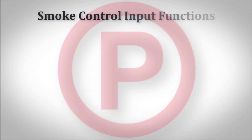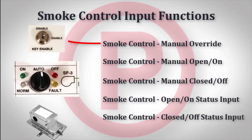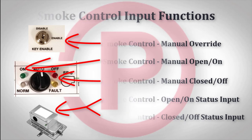To accommodate standard smoke control systems, the Potter programming software has several point types specifically for smoke control. The following inputs are available: smoke control manual override for the key switch enable on the firefighter's smoke control station; smoke control manual open, on, and closed off to monitor the position of the manual control switch; and smoke control open or on and closed off status inputs to monitor the positive feedback contacts of the fan or damper.